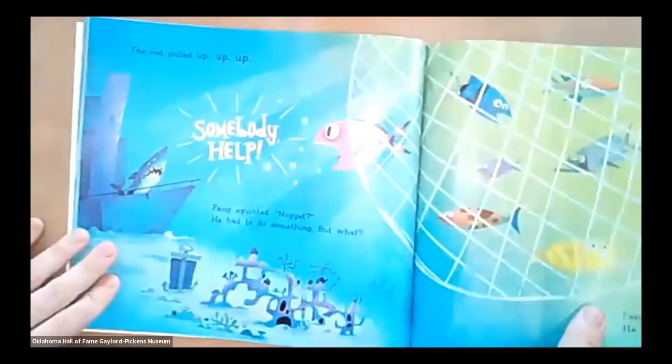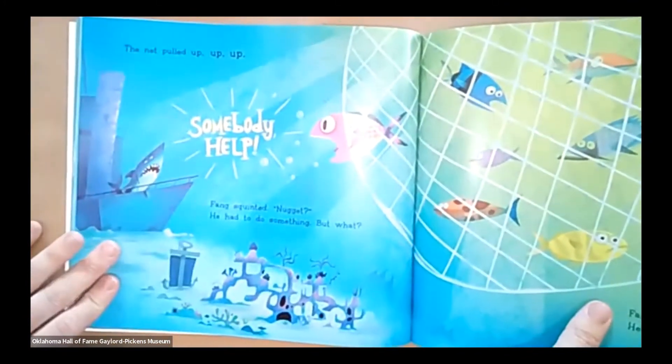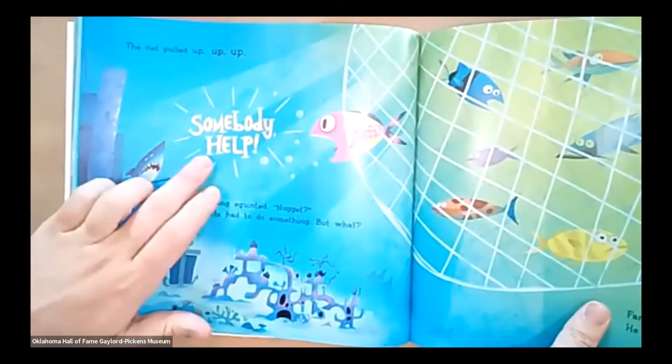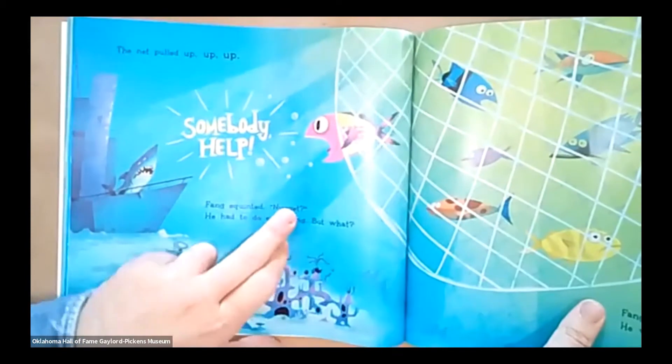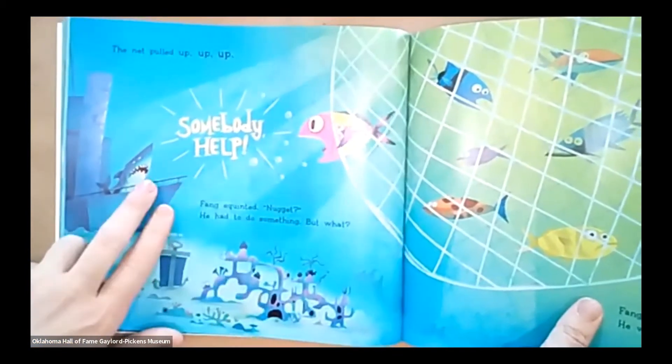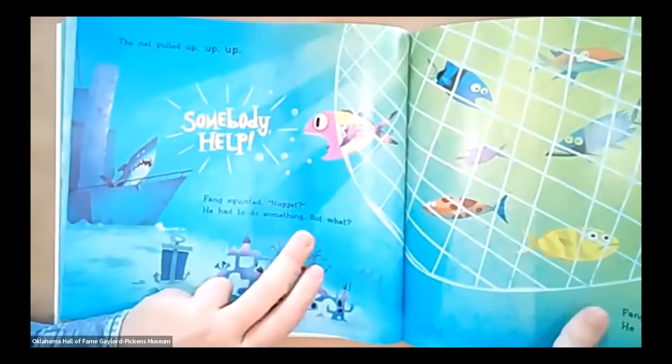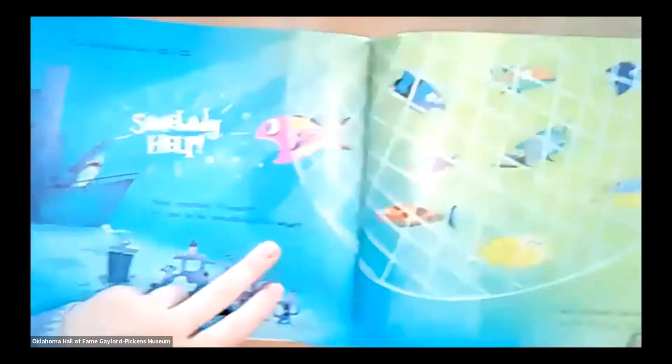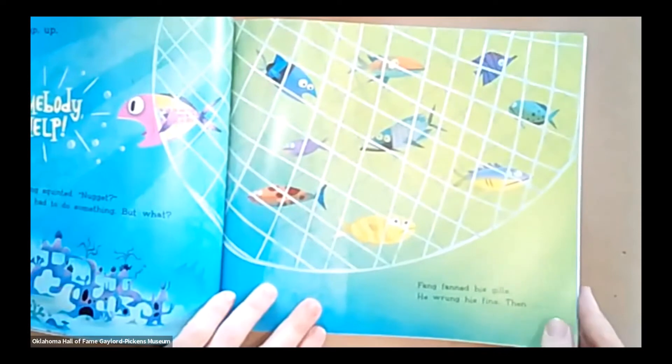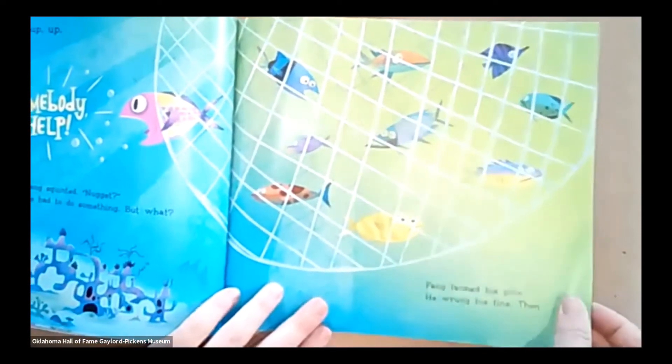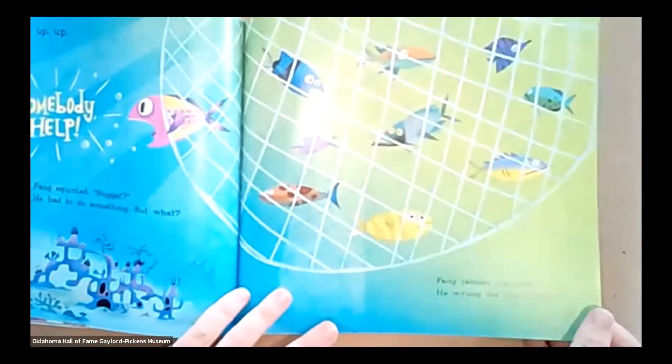The net pulled up, up, up. Somebody, help! Fang squinted. Nugget? See, there's Nugget screaming for help. He had to do something. But what? What was Fang going to do? Fang fanned his gills. He wrung his fins. Then, uh-oh, what's Fang going to do?